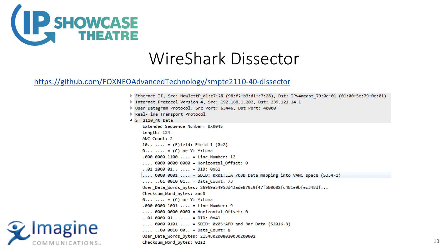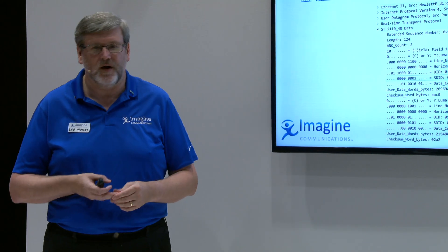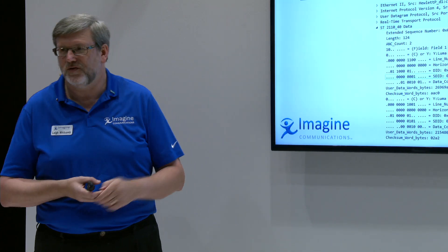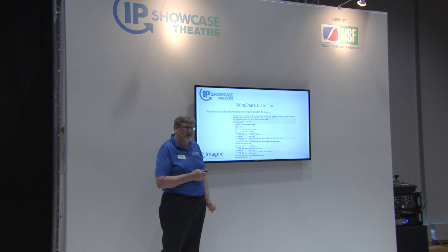For troubleshooting or debugging, our friends at Fox created a plug-in for Wireshark. There's a Lua script you can download from their website. When you install it in Wireshark, pulling up an ANC packet will automatically dissect it — showing you how many services are in the packet, the line number and offset, the DID and SDID (for example, identifying a closed captioning stream), and the data itself. Because ANC services are generally very low data rate, you can capture days or hours' worth without much storage — unlike video streams at 3 Gbps or 10 Gbps.